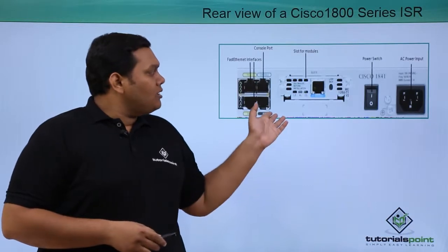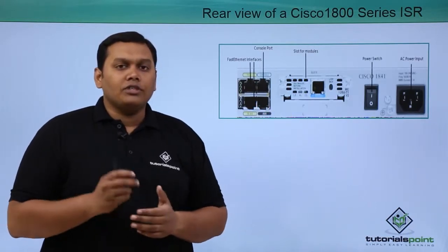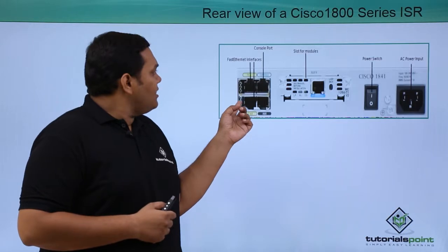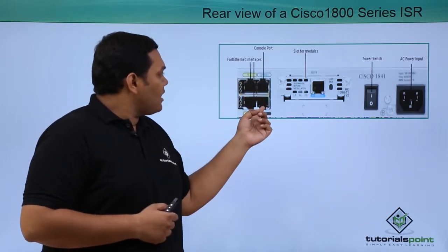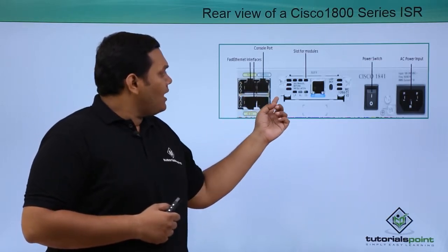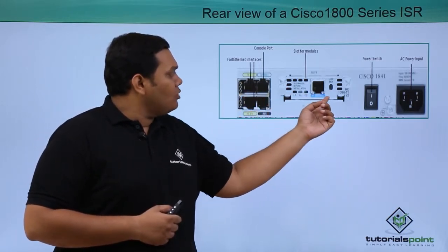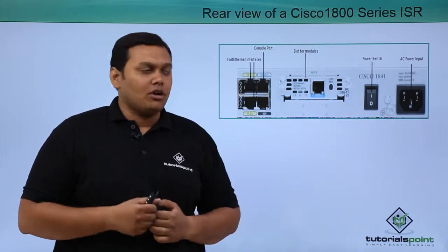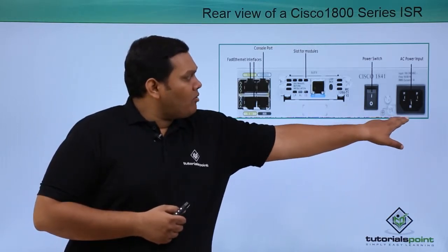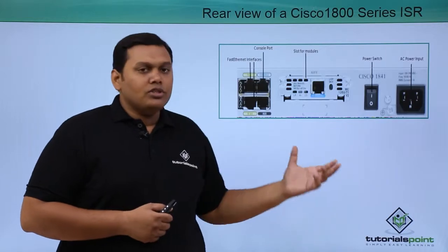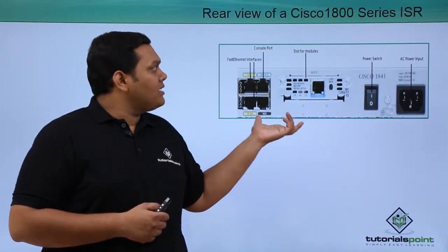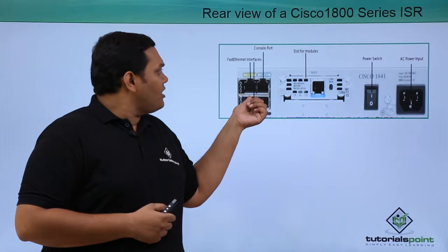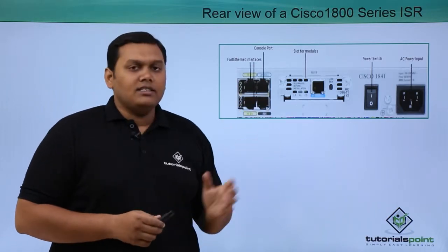Coming to the basic rear view of the ISR series, we can see the fast Ethernet ports, the console ports, and the slots for modules. There is also the power switch to turn the router on and off, and the AC power input. This covers the ports and interfaces available on the basic 1800 series ISR.